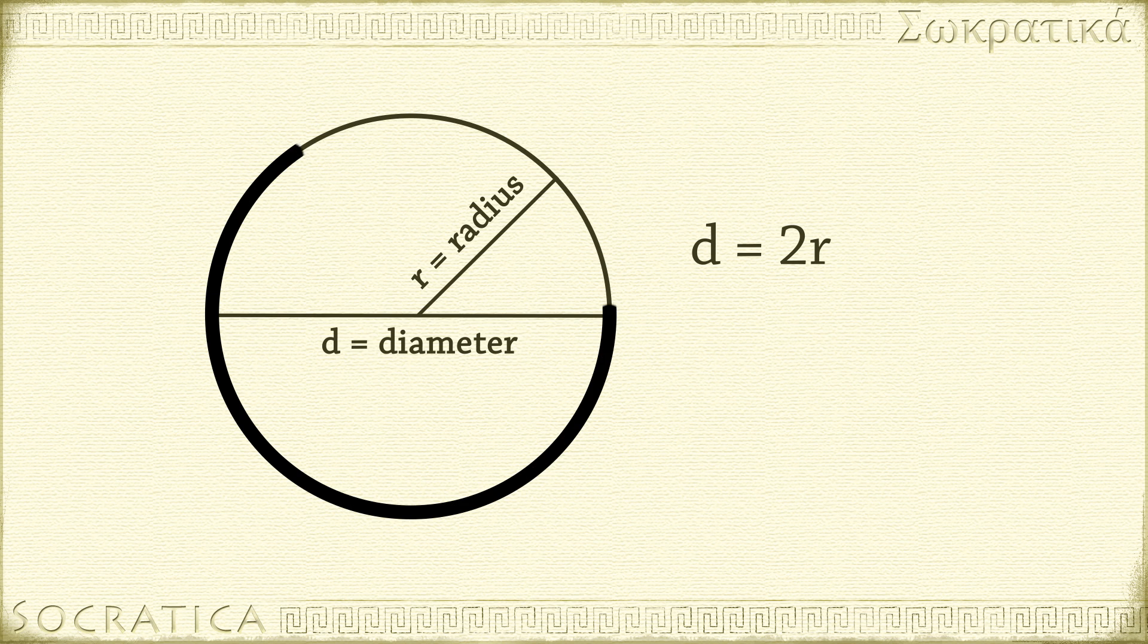The distance around a circle is called the circumference, and you can compute the circumference if you know the diameter using the formula circumference equals pi times diameter.